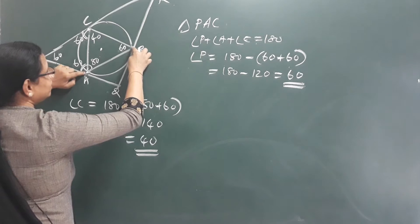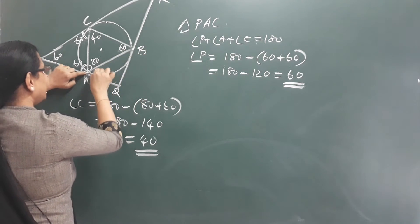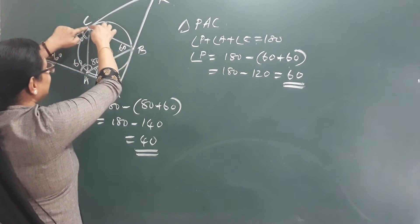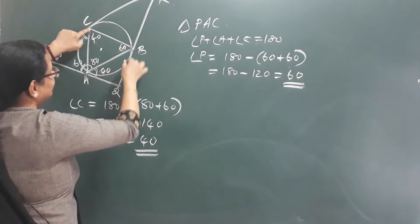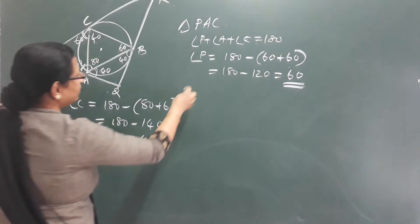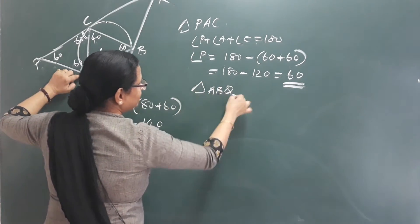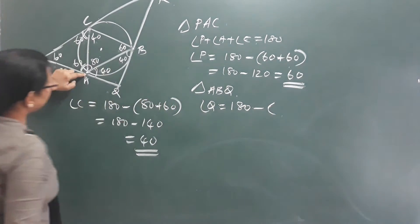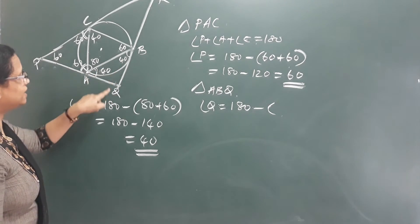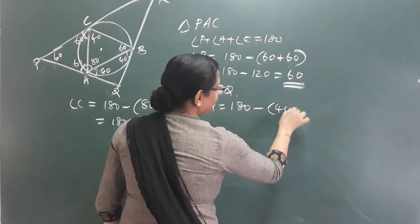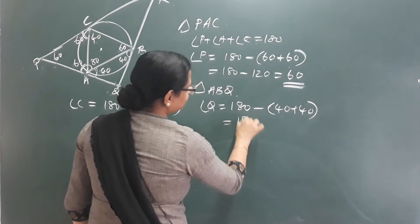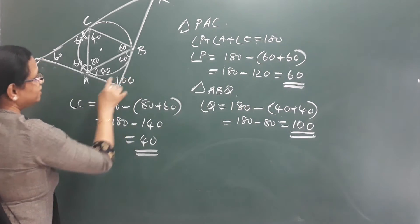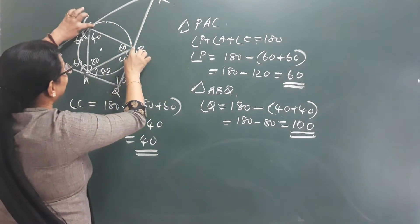This point is A, B as a chord. Joining two endpoints in a circle. In triangle ABQ, the angles sum to 180. These two base angles are 40 each, so 40 plus 40 is 80. Subtracting from 180, angle Q is 100.